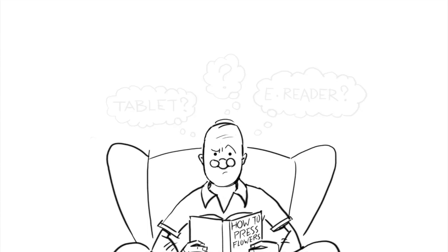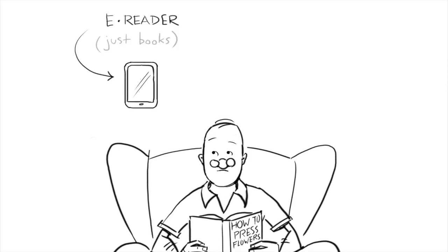Okay, so a lot of people get confused because there are several different devices sharing the e-book market right now. There are basically two categories to consider: e-readers and e-tablets.